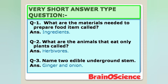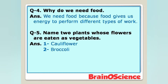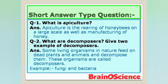Question number three: Name two edible underground stems. Answer: Ginger and onion are two edible underground stems. Question number four: Why do we need food? Answer: We need food because food gives us energy to perform different types of work. Question number five: Name two plants whose flowers are eaten as vegetables. Answer: Cauliflower and broccoli are two plants whose flowers are eaten as vegetables.